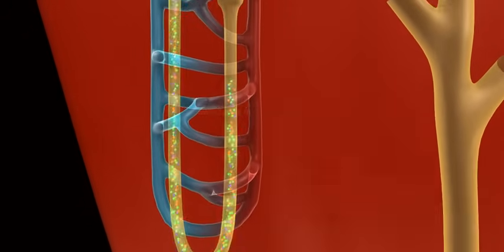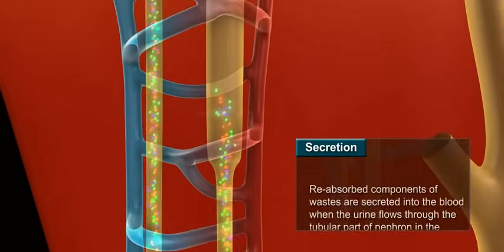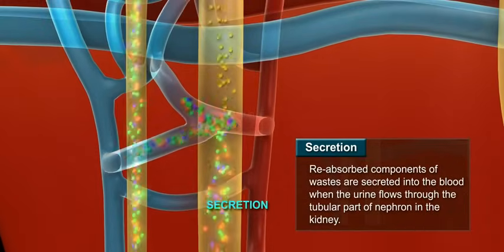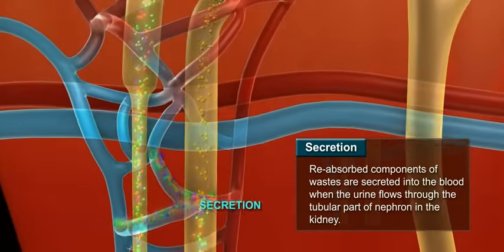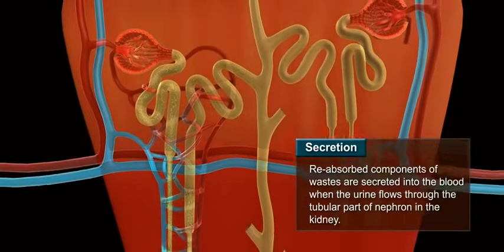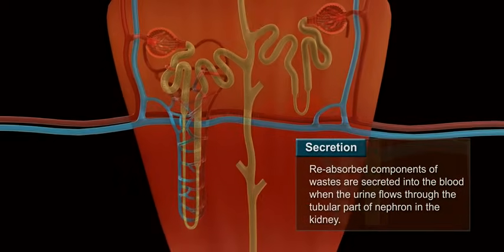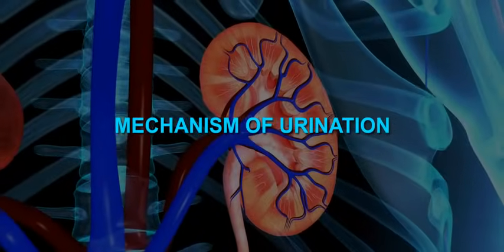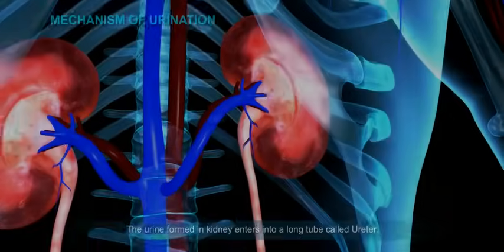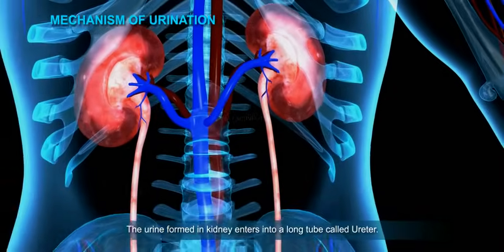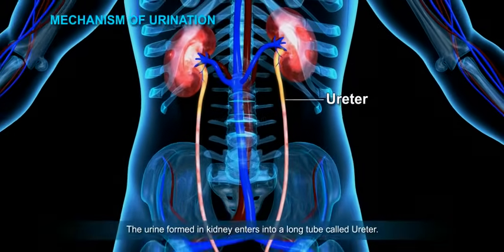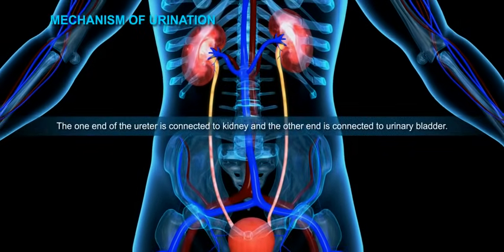Secretion: The reabsorbed components of wastes are secreted into the blood when the urine flows through the tubular part of the nephron in the kidney. Regarding the mechanism of urination, the urine formed in the kidney enters a long tube called the ureter.